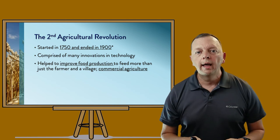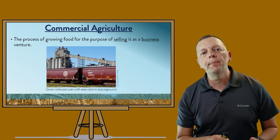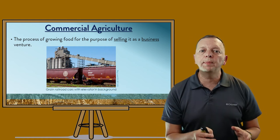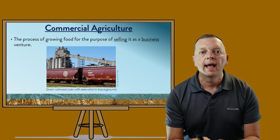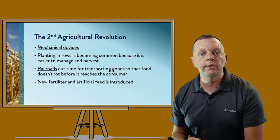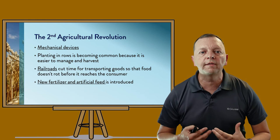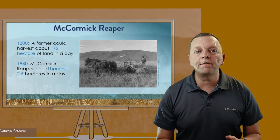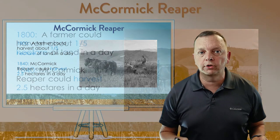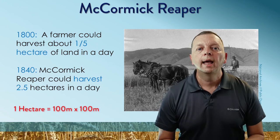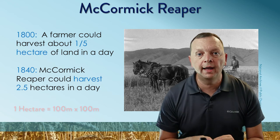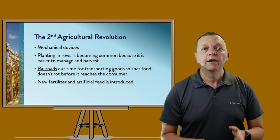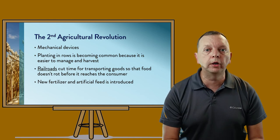One of the things we see coming out of the Second Agricultural Revolution is commercial agriculture. Remember, up until this time we had subsistence agriculture where a farmer only farmed for himself or his family. But now we have commercial agriculture — people growing food specifically for the purpose of selling it as a business. One reason we were able to move from subsistence to commercial agriculture was because of the mechanical devices the Industrial Revolution provided, including new plows and the McCormick Reaper. In 1800, it would take a farmer nearly a day just to farm one-fifth of a hectare. However, with the McCormick Reaper, by 1840 that same farmer could farm two-and-a-half hectares in that same day — 25 times more effective. Because of mechanical devices, for the first time we started actually planting in rows, because it was easier to use machinery to harvest.